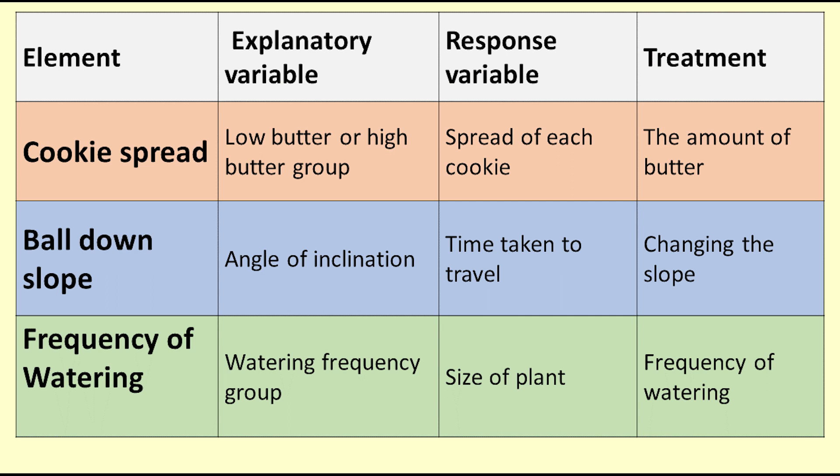For the plant watering experiment, the explanatory variable is the group the plant is assigned to, watered daily or every two days. The response variable is the amount the plant grows. The treatment is watering daily or every two days.